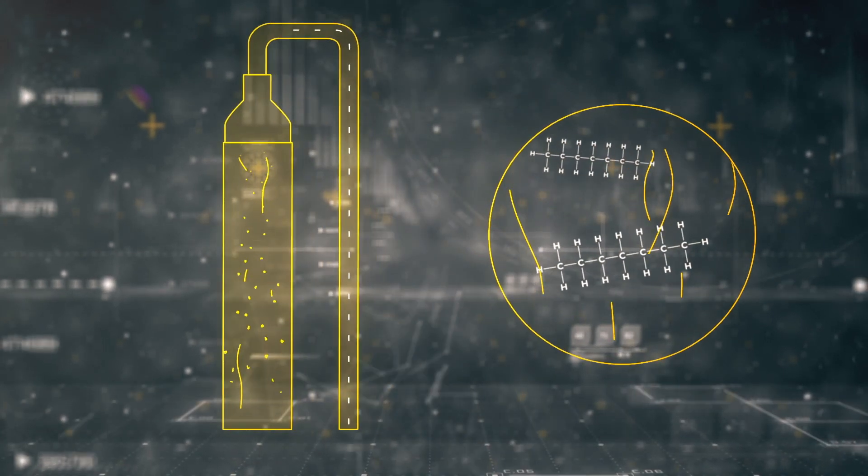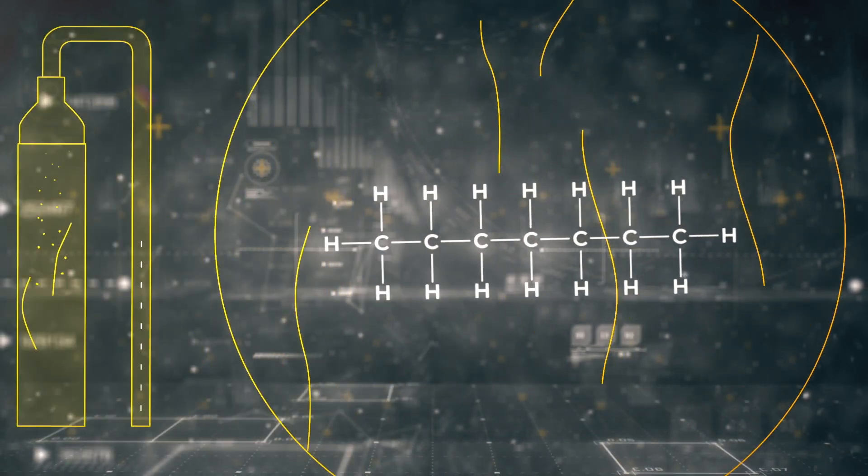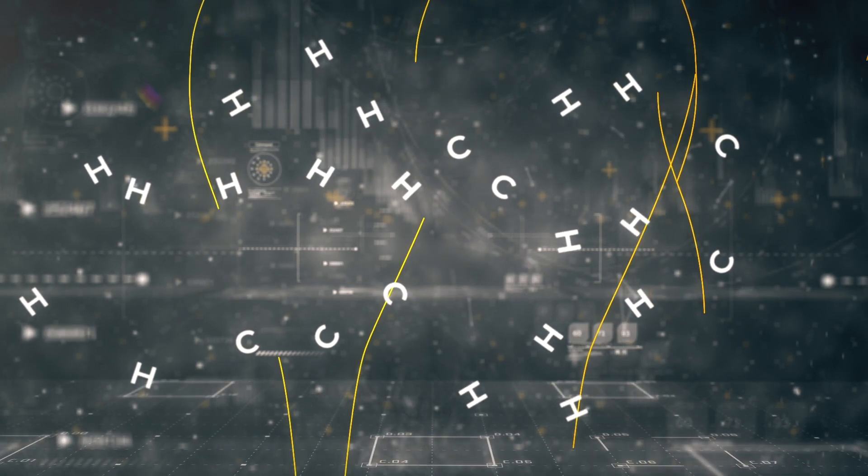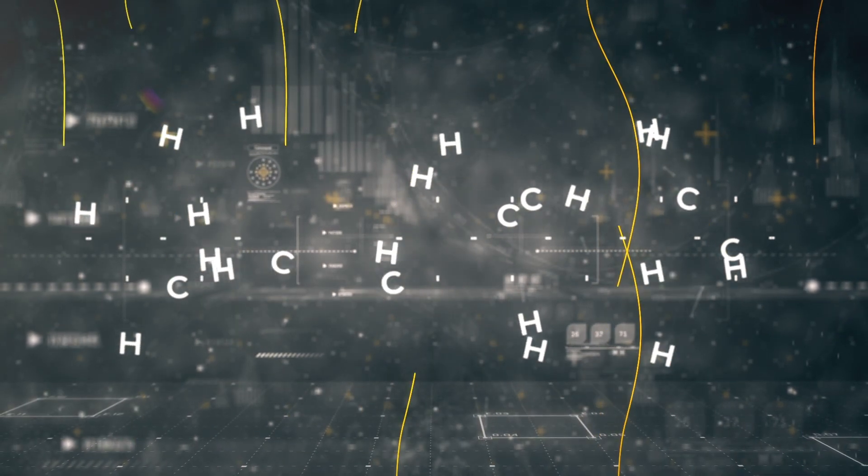Once in the reactor, the supercritical steam acts as molecular scissors, cutting the bonds in the plastic and donating hydrogen to form new stable shorter chain hydrocarbons.